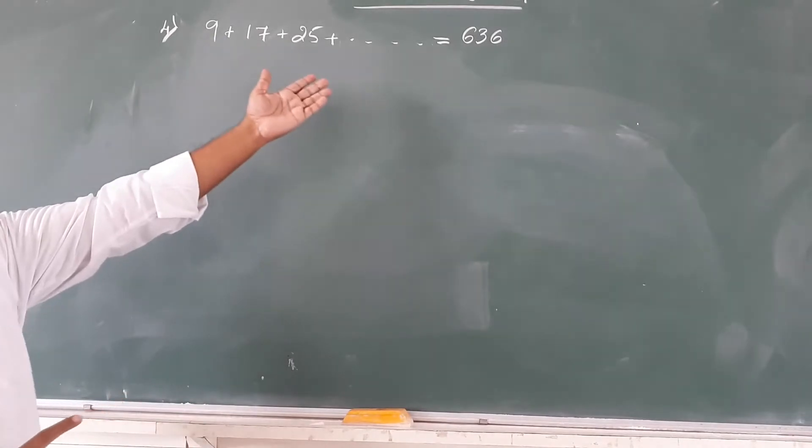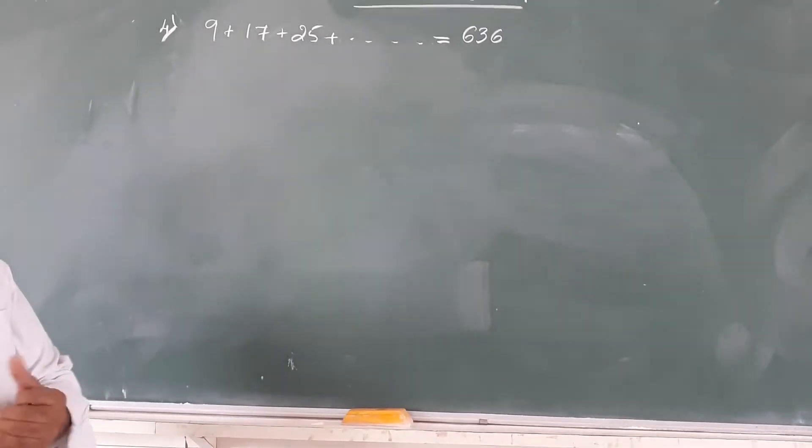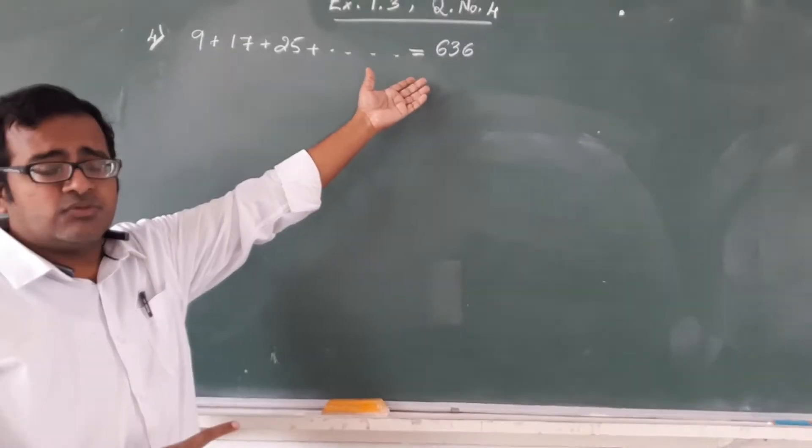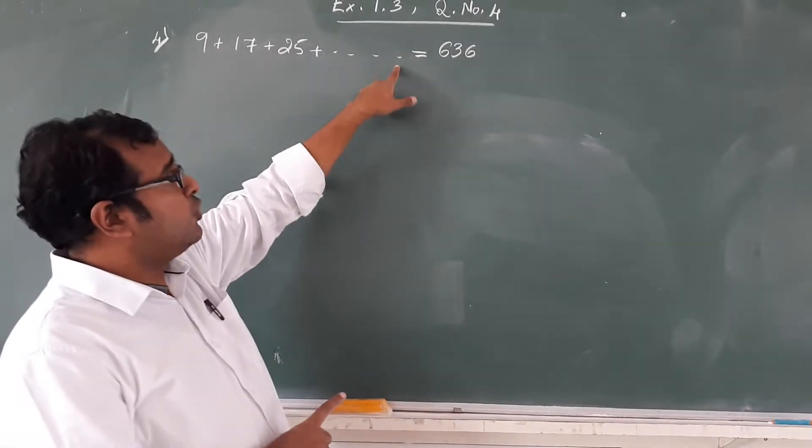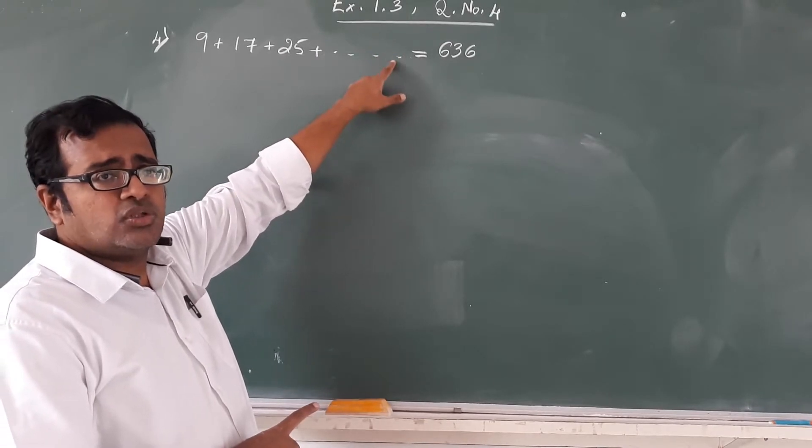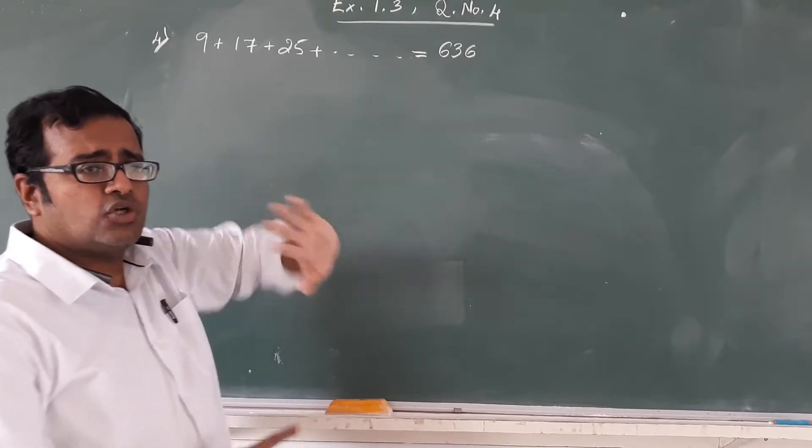I have written the question as how much we require. 9 plus 17 plus 25 and so on equals 636. We do not know the last term. I want you to concentrate on this - we do not know the nth term or the last term.